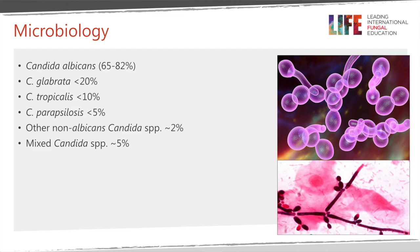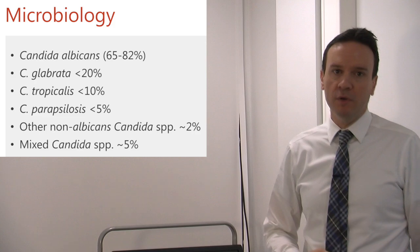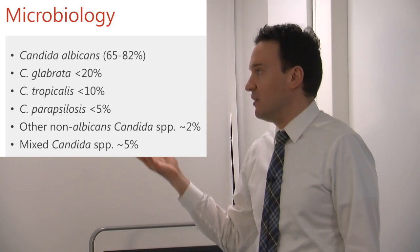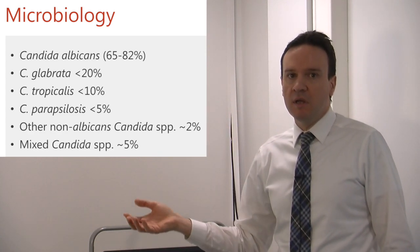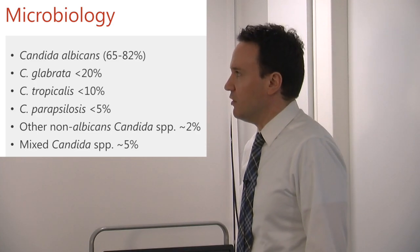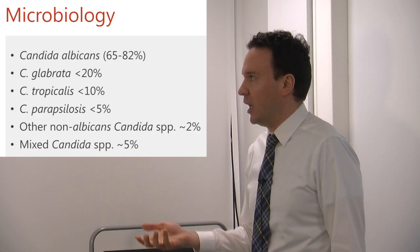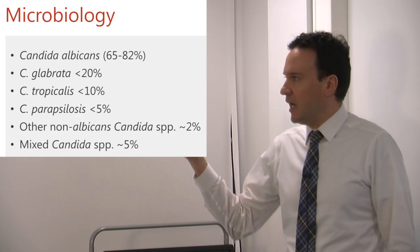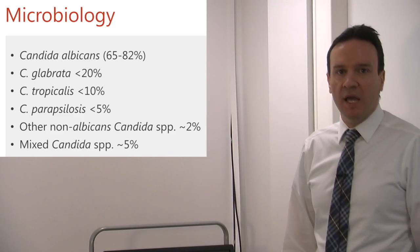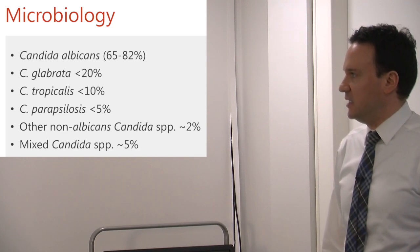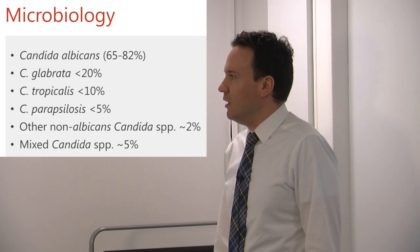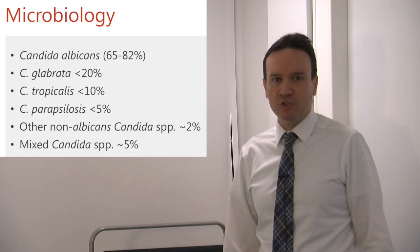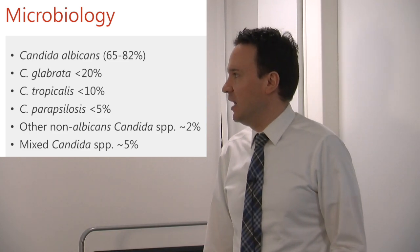Regarding microbiology, as with candidemia, Candida albicans is the most common infecting organism, accounting for more than 50% of cases. Candida glabrata ranks second, though its incidence is rising in many hospitals. Candida tropicalis, Candida parapsilosis, and other non-albicans Candida species can also be associated with intra-abdominal infection. In a small percentage of cases, infection with two or more Candida species occurs simultaneously.